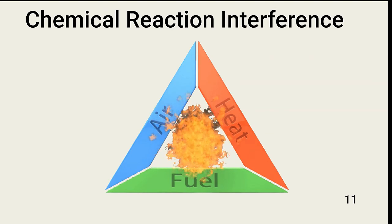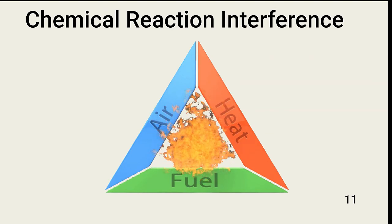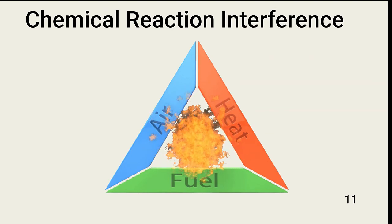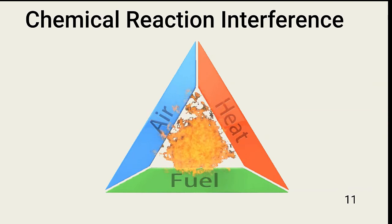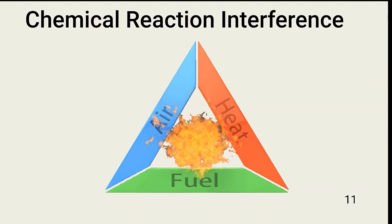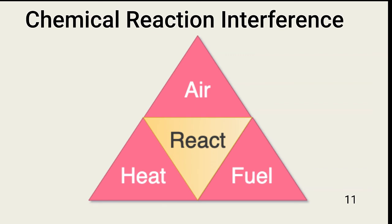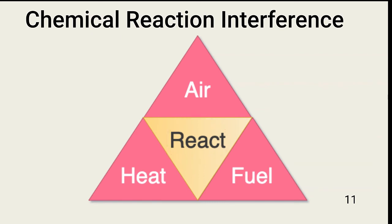Let's take a quick look at chemical reaction interference. This is the traditional fire triangle, also used in the fire tetrahedron. The tetrahedron includes air, heat, and fuel with the addition of the chemical reaction that perpetuates the fire. Interfering with the reaction destroys the ability of the fire to feed itself.